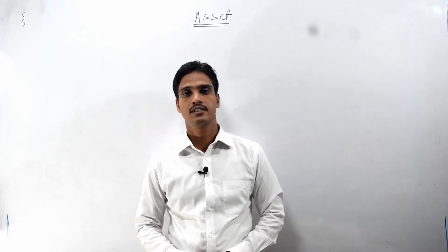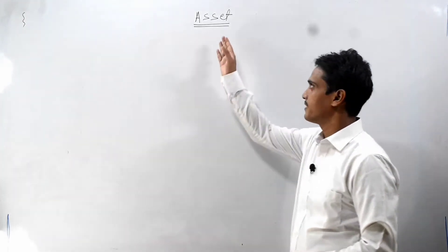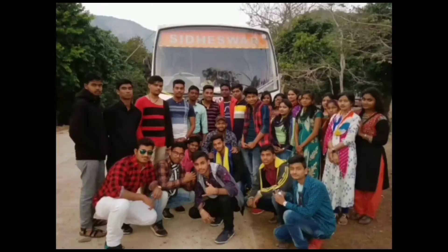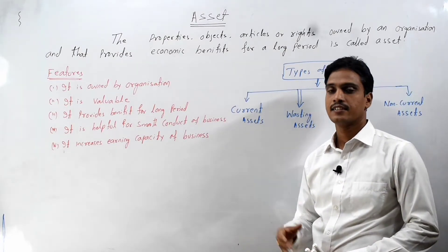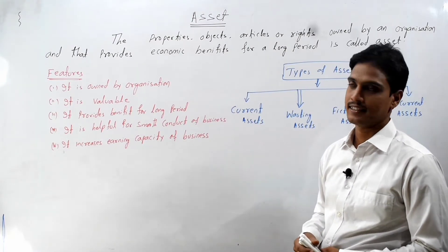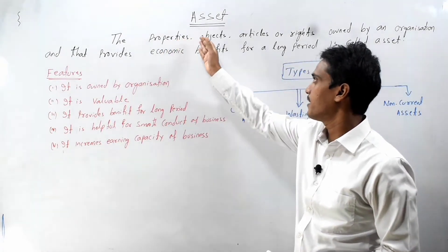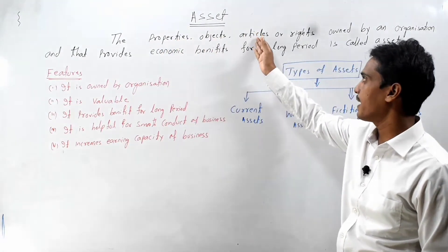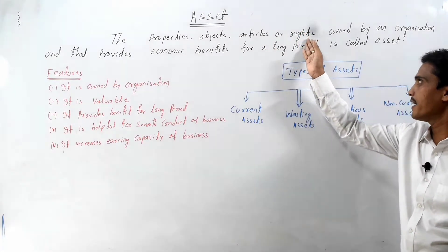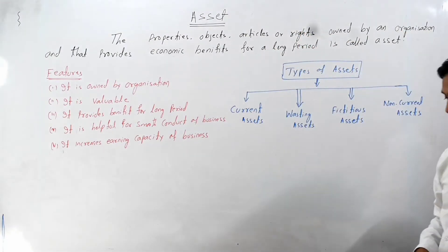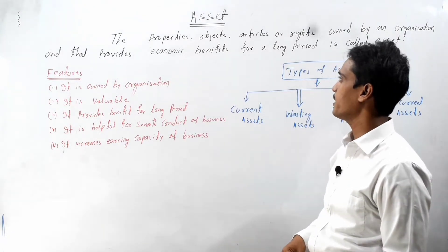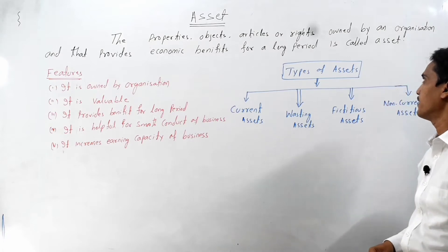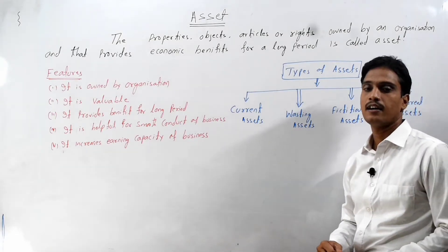Welcome to today's topic: Asset. So let's start with the meaning of asset. The properties, objects, articles, and rights owned by an organization that provide economic benefits for a long period are called an asset.